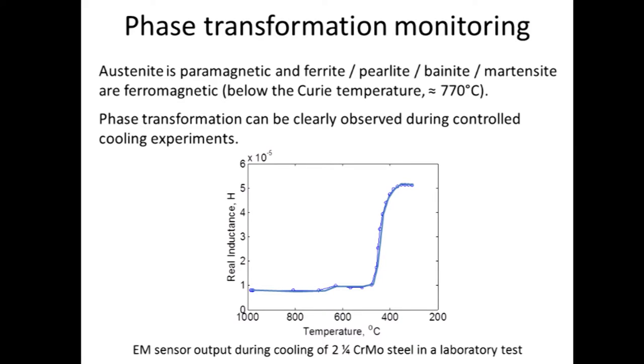I'd like to talk a bit about where things have got to and then some of the scientific basis of how this field is developing. So we take phase transformation monitoring — this is very much looking at in-situ measurements during steel processing. There are very large signal changes when we go from an austenitic phase to any of the product phases: ferrite, pearlite, bainite, martensite — provided we're below the Curie temperature, we go from a paramagnetic phase to a ferromagnetic phase and therefore get large signal changes.